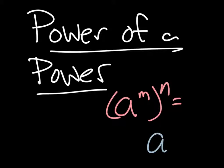So a to the m to the n is a to the m times n. We call this property the power of a power.